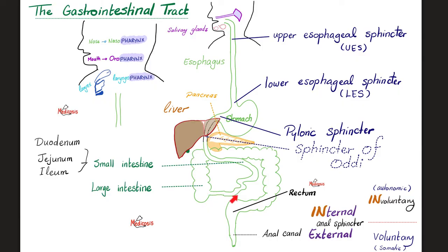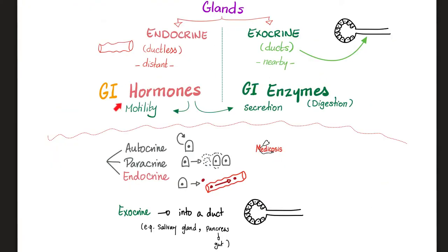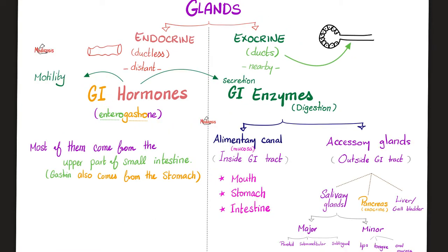This is a quick review of the anatomy of the gastrointestinal tract. What are the cells that secrete gastrin? They are usually in the stomach and in the upper part of the small intestine. In abnormal conditions, you can have a tumor in the pancreas that releases gastrin. Gastrin is one of these gastrointestinal hormones, which come from the upper part of the small intestine and sometimes from the stomach.